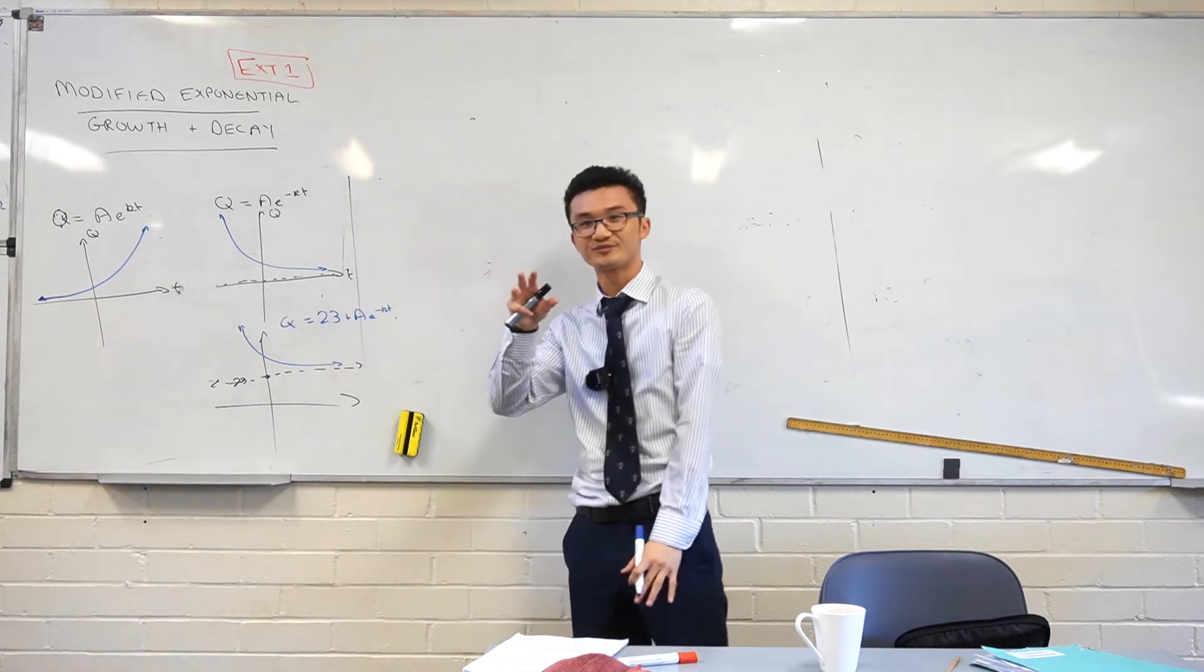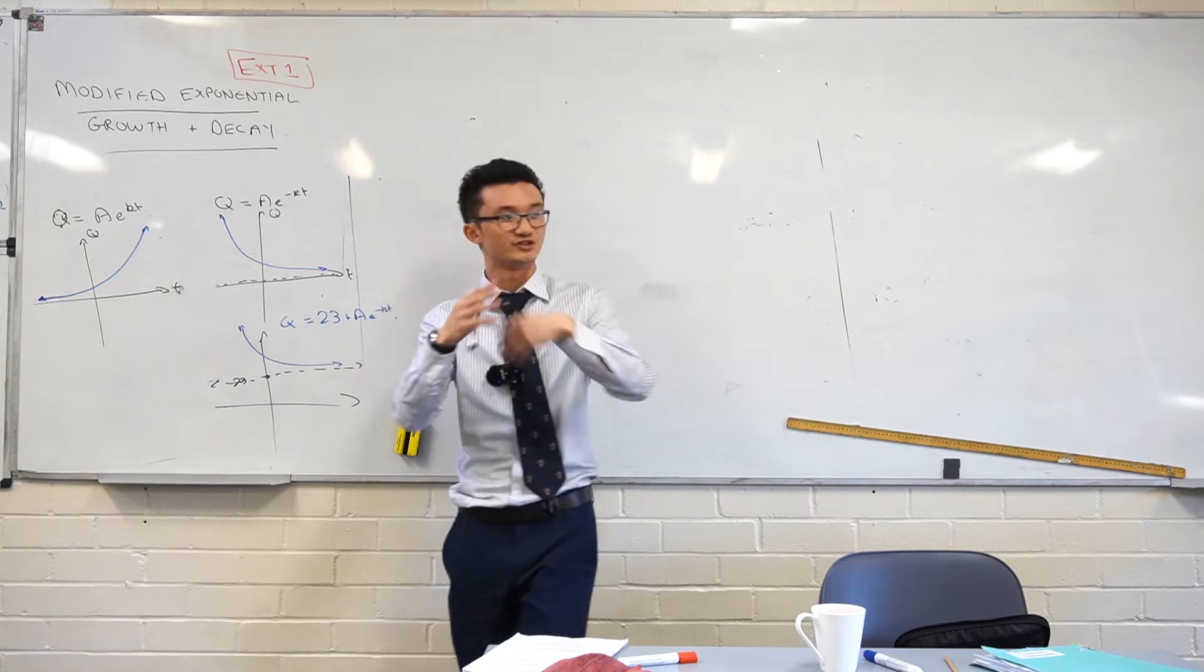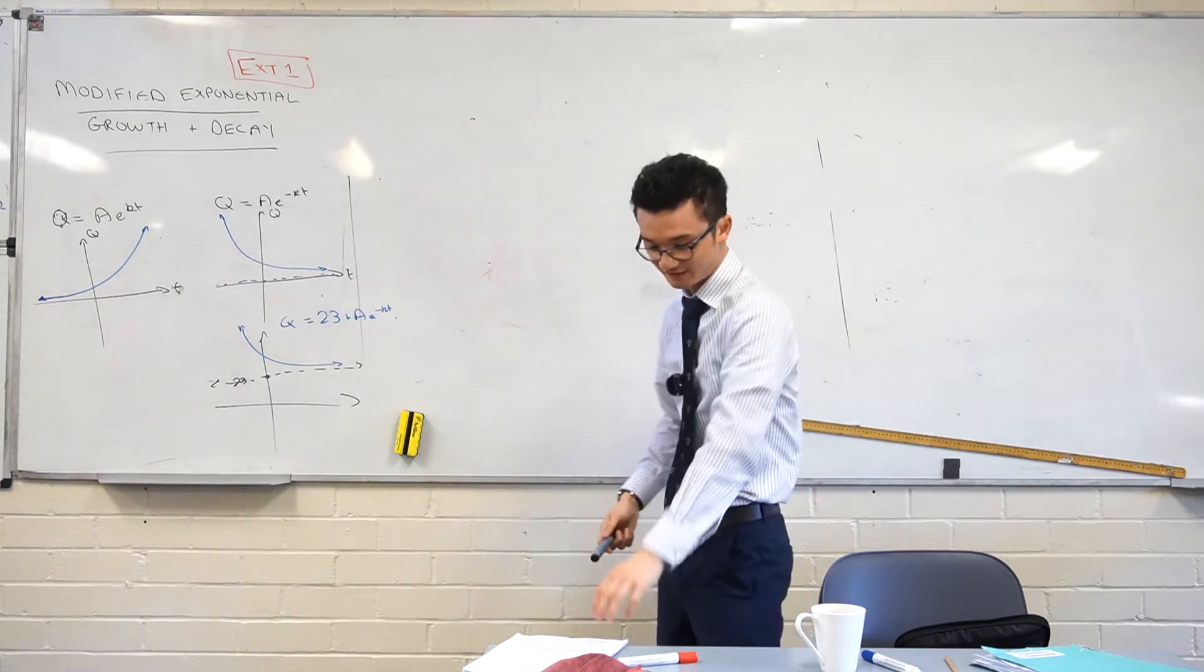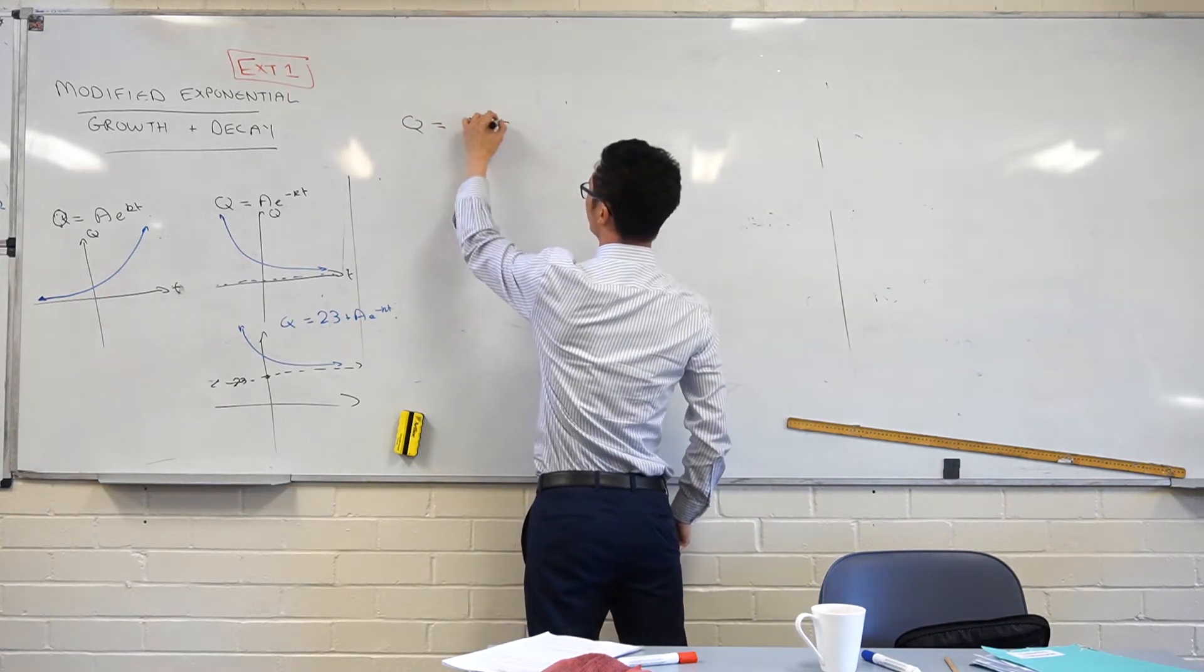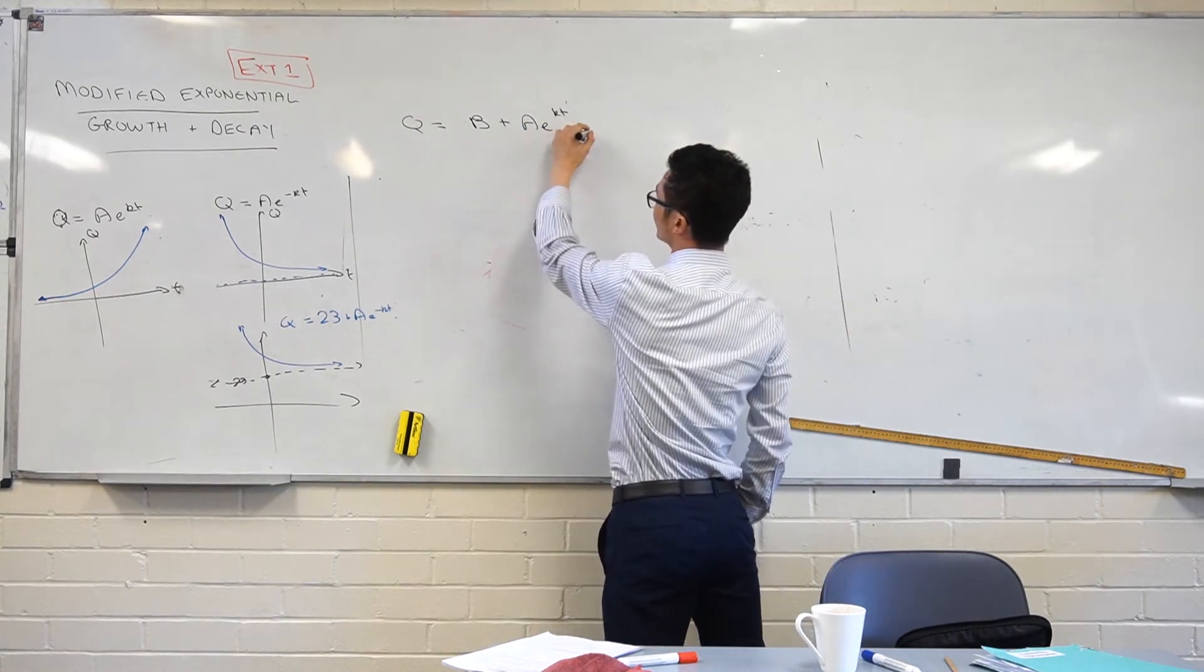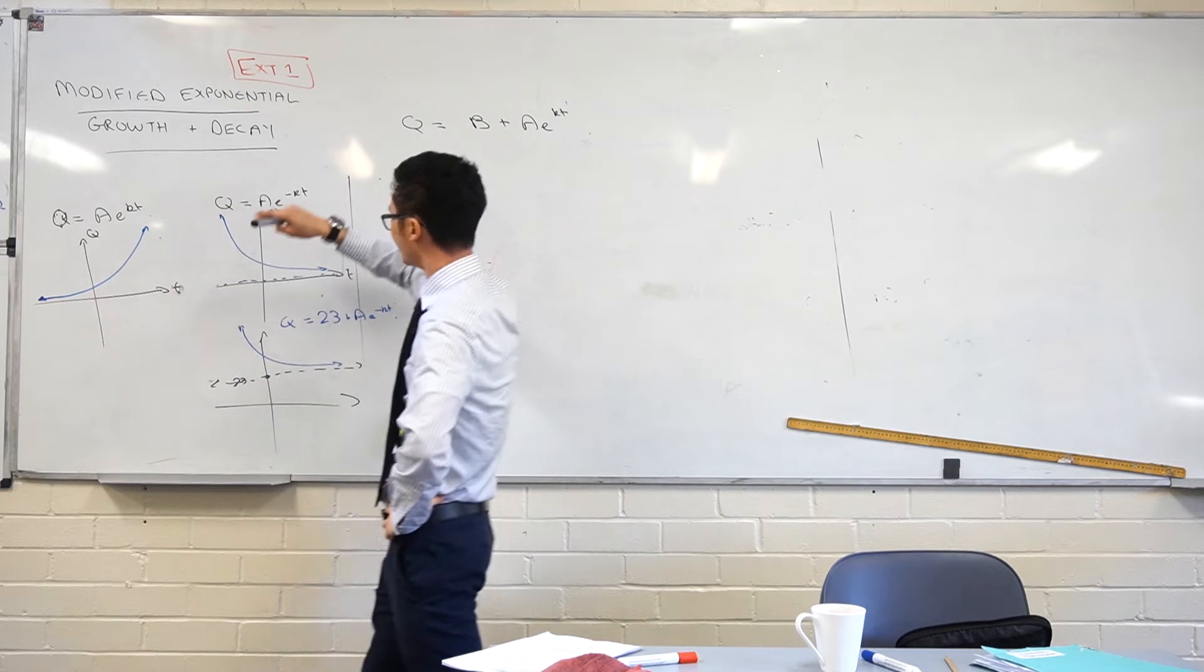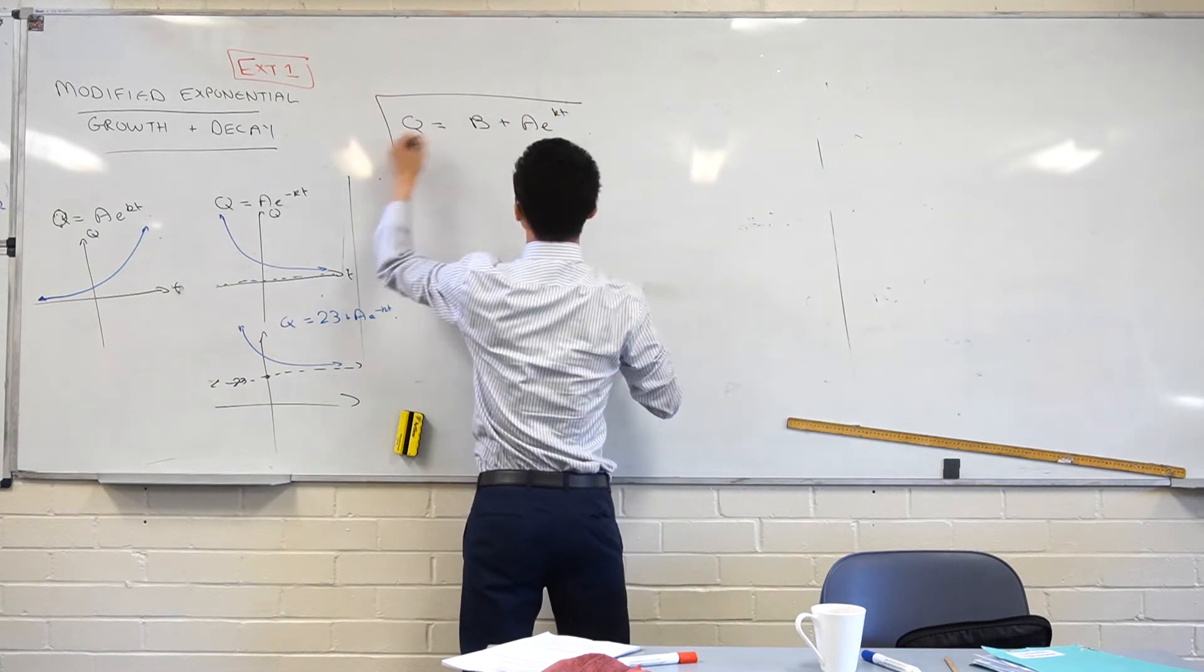This is our form for modified exponential growth and decay. We have a constant in front now. It could be 23, it could be any other value. That's this idea. We're changing the current exponential growth and decay model so that we can account for other situations. The more complex the situation you get, the more variables we have to incorporate. But let's get this down first. We have our general form: Q is equal to b plus ae to the kt. This is our general form.